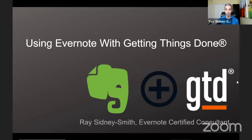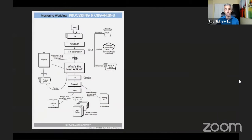In Getting Things Done by David Allen, he generated a workflow chart. Many people know this as the processing and organizing flowchart used to clarify and organize items as we make our way through the GTD system.